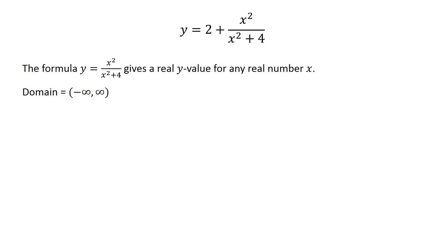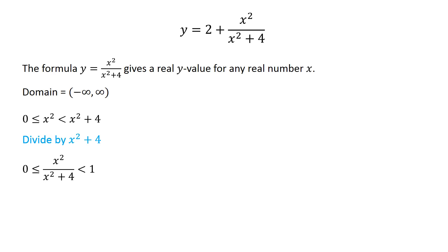This function gives a real value for any real number x, so the domain is the set of all real numbers. The value of x squared is always greater than or equal to 0 and less than x squared plus 4. Dividing this inequality by x squared plus 4, we get x squared over x squared plus 4 is greater than or equal to 0 and less than 1.